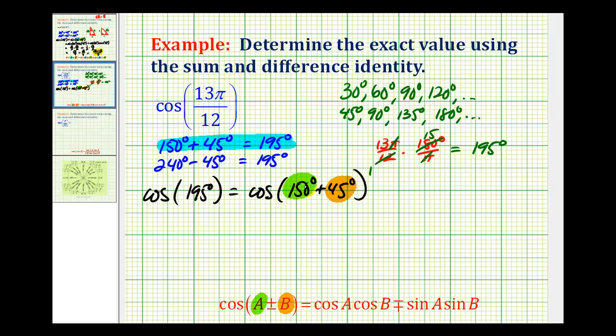So we'll substitute 150 degrees here and here, and we'll substitute 45 degrees here and here. The last thing to mention is we use the sum of two angles, which is the top operation here. So we have to use the top operation here, which is subtraction. Applying this identity, we'll have cosine 150 degrees times cosine 45 degrees minus sine 150 degrees times sine 45 degrees.